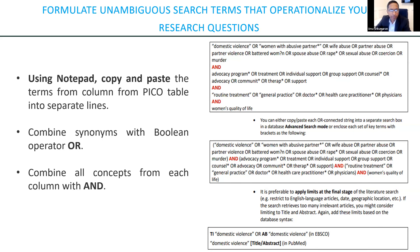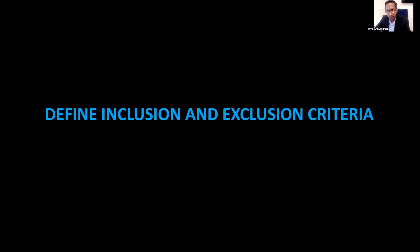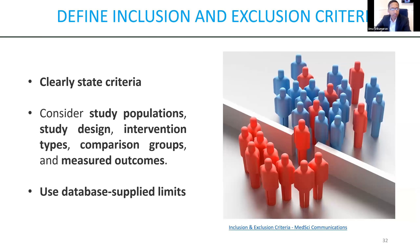From that collection, you apply a set of inclusion and exclusion criteria. These need to be very clearly stated and predetermined. You consider the whole spectrum — your study population, the design itself, intervention types, comparator groups, and specific outcomes. We'll hear more about some limitations of the different databases you can use to collect this type of information.